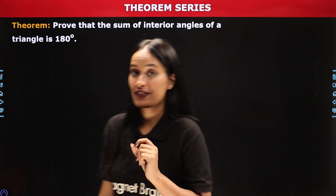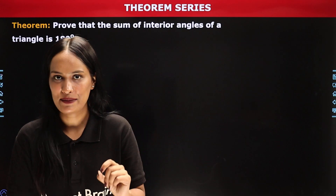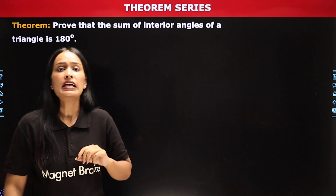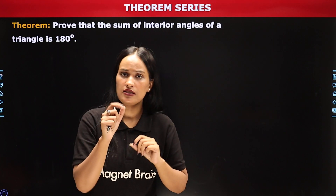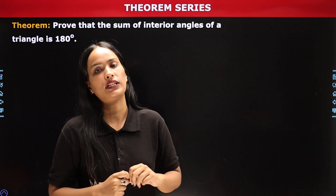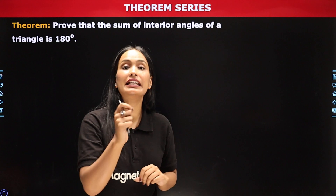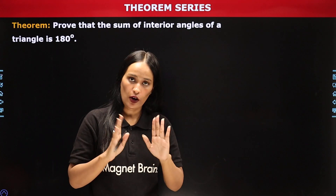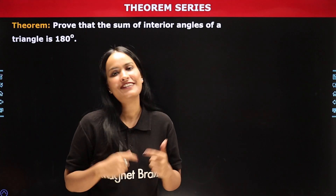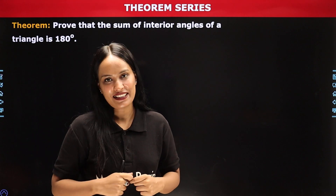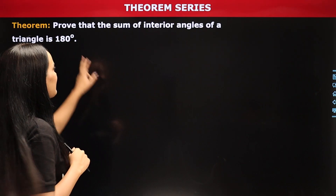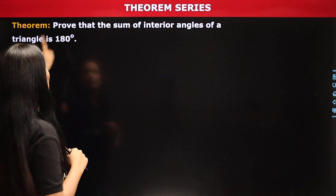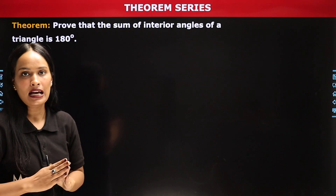Angle Sum Property of a Triangle क्या कहती है? Angle Sum Property of a Triangle ये कहती है कि किसी भी triangle में जितने भी interior angles होते हैं, उन interior angles का जो sum होता है, वो fixed है और वो 180 degree के बराबर होता है। The sum of interior angles of a triangle is 180 degree.